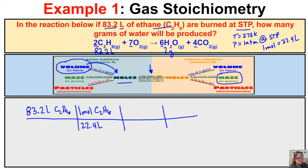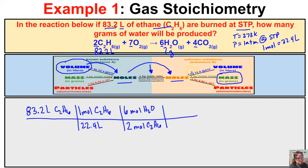Now we need to figure out how many moles of unknown substance there are, so we need to come up with our mole ratio. Looking at our balanced chemical equation, we're comparing the unknown stuff to the known stuff. Our unknown quantity tells us that there are 6 moles of H₂O for every 2 moles of C₂H₆. We put moles of C₂H₆ on the bottom so we can cancel those units. The question is asking for grams of water, so we need to multiply by the molar mass.